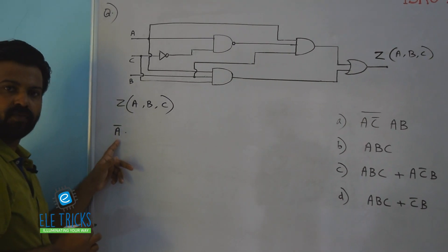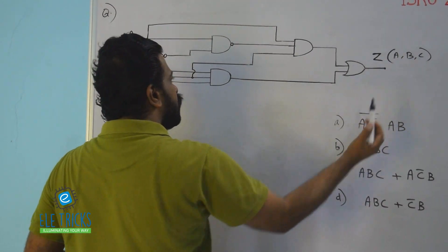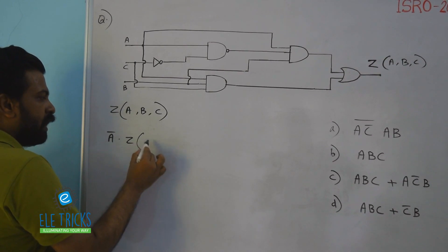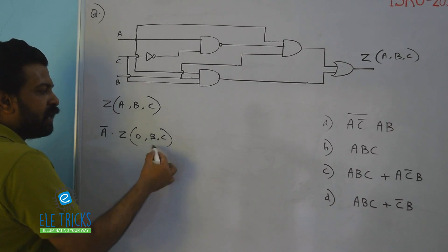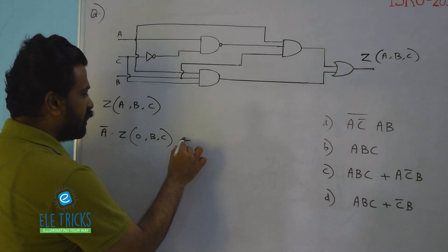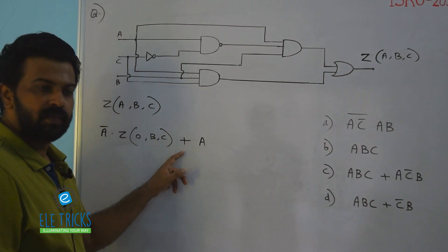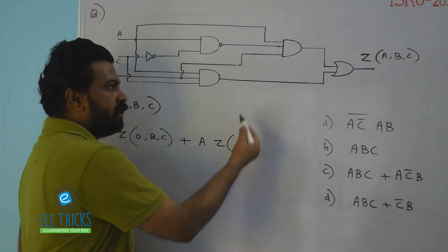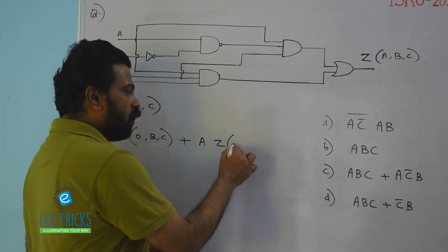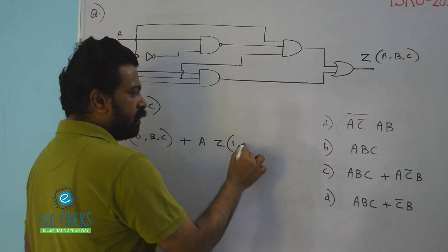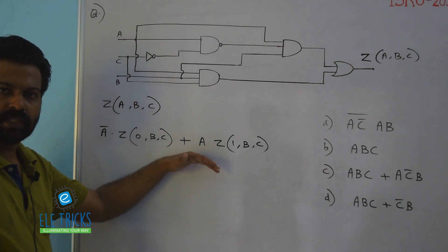By Shannon's expansion, taking A outside: first, in the complemented form, A-bar is taken outside and the argument A is replaced by 0 while B and C remain as they are. Then, taking A in normal form outside, the argument A is replaced by 1 and B and C remain as they are. This is the statement of Shannon's expansion expanded using variable A.